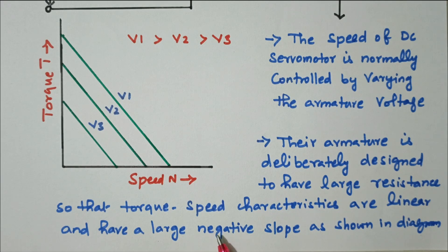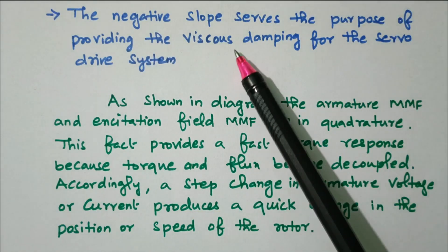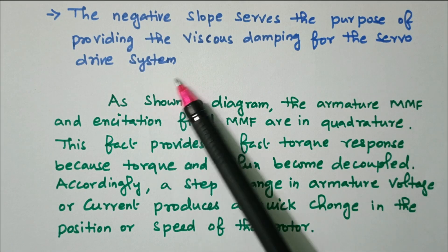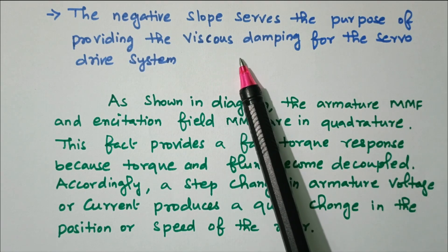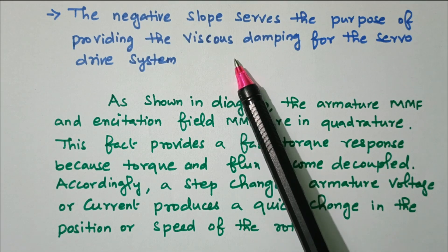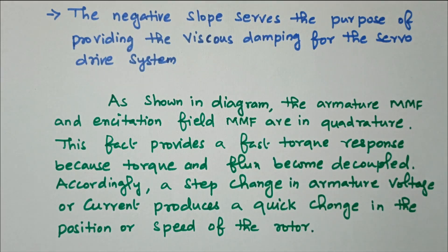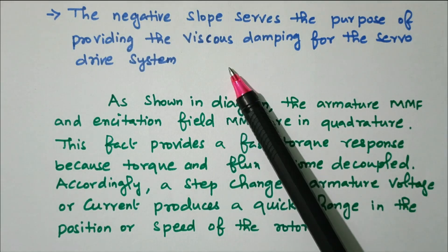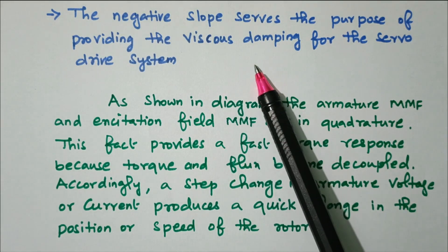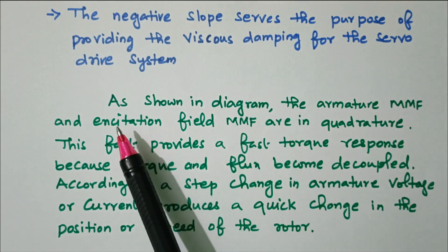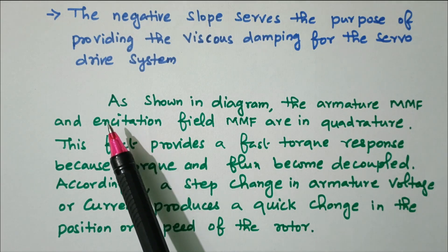The negative slope serves the purpose of providing viscous damping for the servo drive system. Viscous damping is one of the control forces. Due to the negative slope, more viscous damping is available, which is used for control purposes.